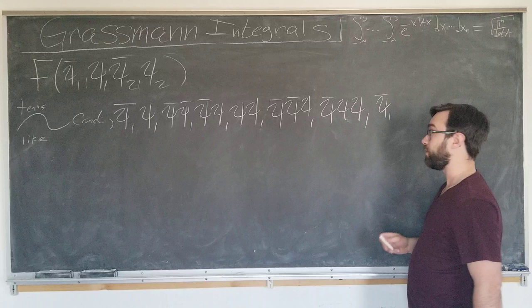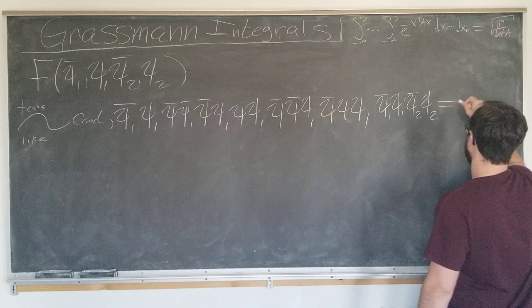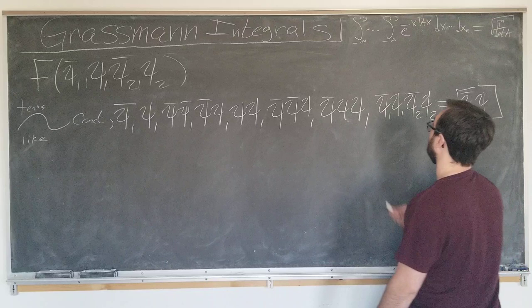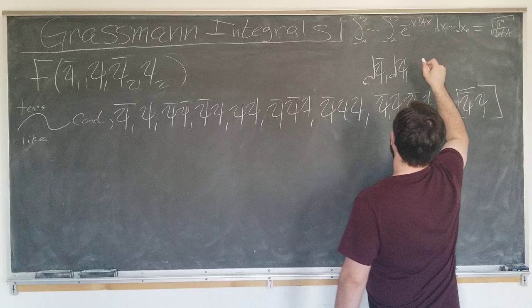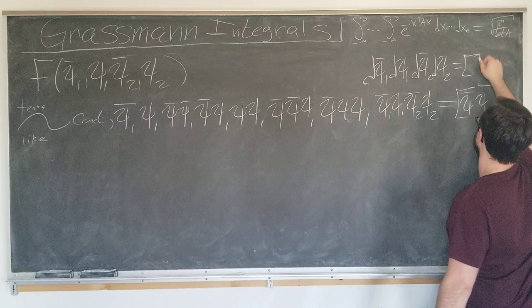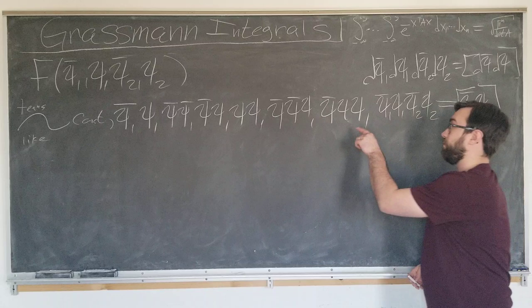We're going to choose the order as psi 1 bar, psi 1, psi 2 bar, psi 2, and denote this special notation, psi bar psi in brackets, with the corresponding integration element, d psi 1 bar, d psi 1, d psi 2 bar, d psi 2, to be d psi bar, d psi in brackets.